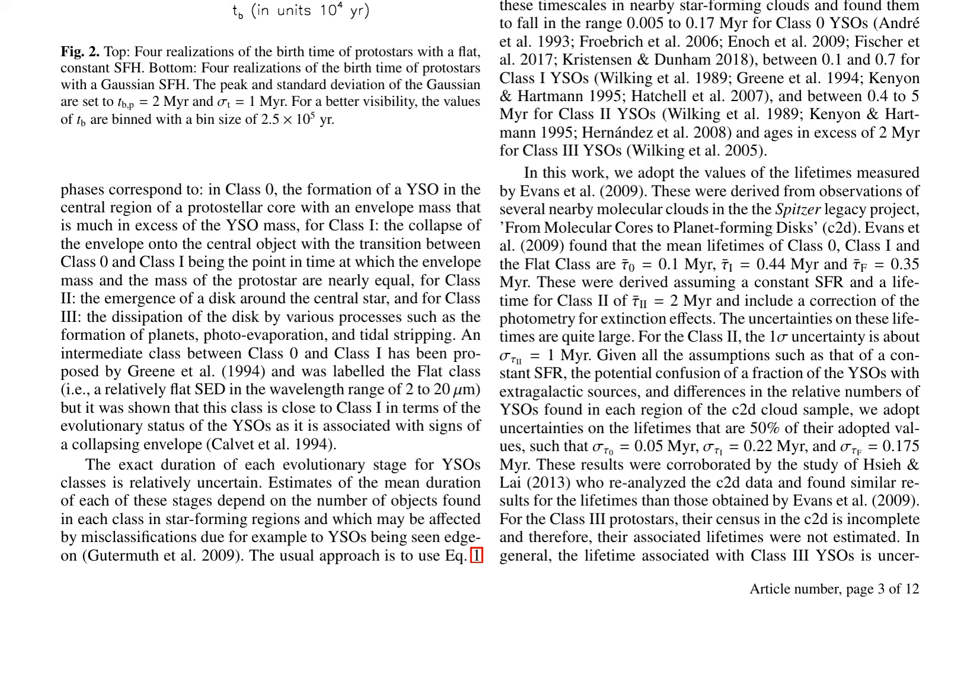Finally, the authors calculate the star formation rate (SFR) using equation 1, taking into account the mean lifetimes of each protostellar class. They also measure the true SFR by summing the masses of protostars formed within each time step, as described in equation 5. The time evolution of the SFR is displayed in Figure 5, demonstrating the impact of the SFH assumption on SFR estimates.